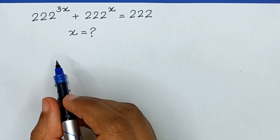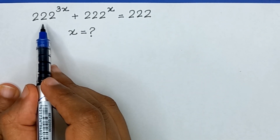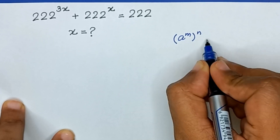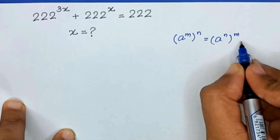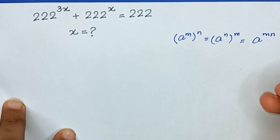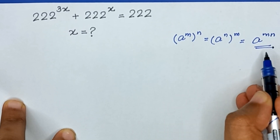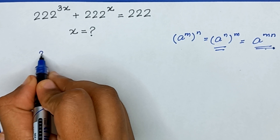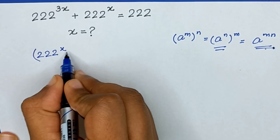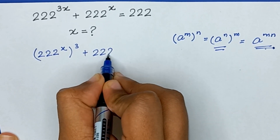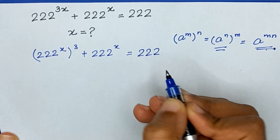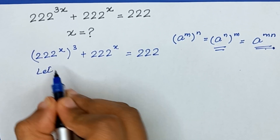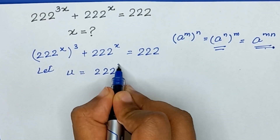Let's start our question. We have 222 raised to the power 3x. As we know, a raised to the power m·n can be rewritten as a raised to the power n, whole raised to the power m. So it becomes (222^x)^3 plus 222^x equals 222. Since 222^x appears twice, we let u equal 222 raised to the power x.